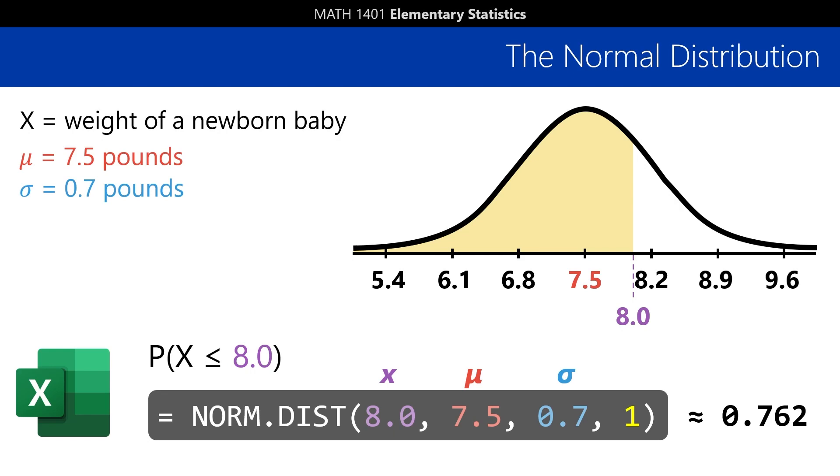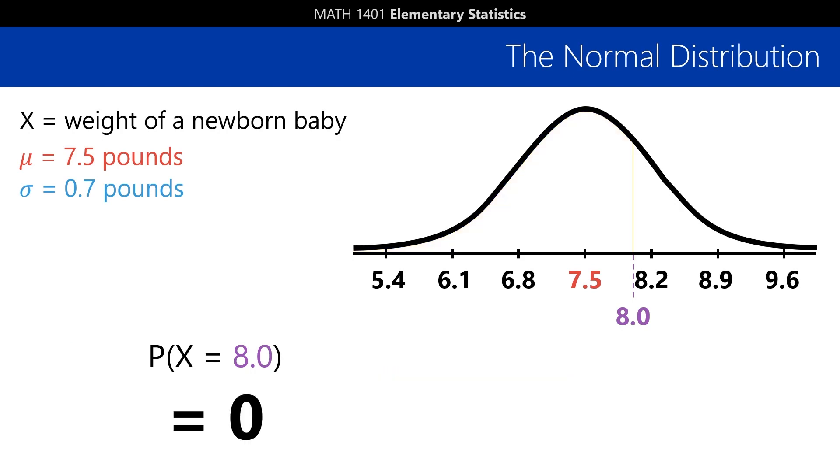By the way, take note, we always use cumulative probabilities for continuous distributions. In fact, it turns out the probability of getting any one value exactly is pretty much 0.